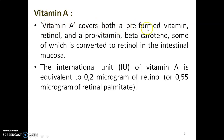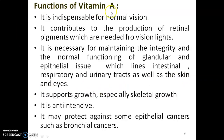Vitamin A covers both pre-formed vitamin retinol and pro-vitamin beta-carotene, some of which is converted to retinol in the intestinal mucosa. The international unit (IU) of vitamin A is equivalent to 0.2 microgram of retinol or 0.55 microgram of retinol palmitate. Functions of vitamin A: it is indispensable for normal vision, contributing to the production of retinal pigments needed for vision in low light.